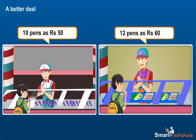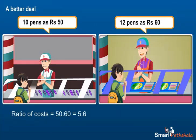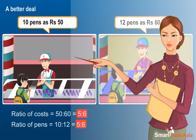Can you tell from which shop should Mohan buy the pens? We can see the ratio of the money for both the shops is 50 is to 60, which is 5 is to 6. Similarly, the ratio of number of pens is 10 is to 12, which is equal to 5 is to 6.